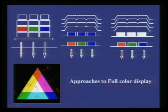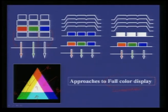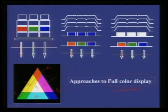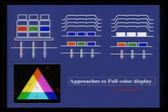There are different approaches to getting full-color display. One approach is to use three separate materials to get red, green, and blue. Another is blue-to-red, blue-to-green, and blue-to-blue down conversion — since blue is a high-energy emission, you put proper filters to get white light, or down-convert to red and green. This is another way to get RGB colors.